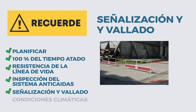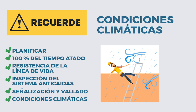Todo trabajo en altura que implique el uso de elementos con riesgo de caída deberá contar con la señalización adecuada en el nivel inferior: valla y cartel. De no ser factible, se instalarán defensas, redes de seguridad o bandejas de contención para prevenir la caída de materiales, herramientas u otros elementos. Antes de iniciar el trabajo y durante su ejecución, se debe considerar el estado meteorológico: viento, lluvia, tormentas, heladas, para evaluar si las condiciones representan una condición insegura para el trabajo en altura, como viento superior a 50 kilómetros por hora, lluvia, tormentas o heladas.